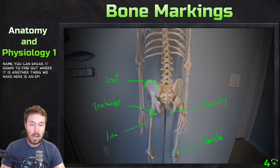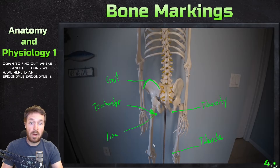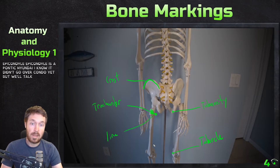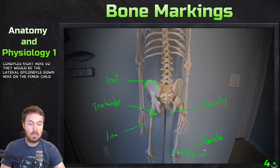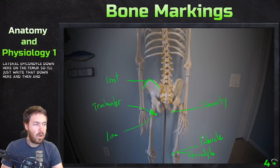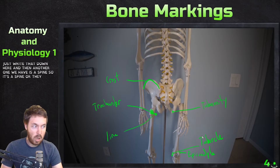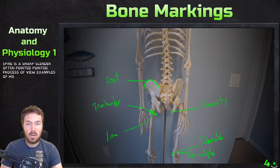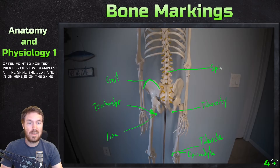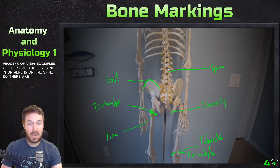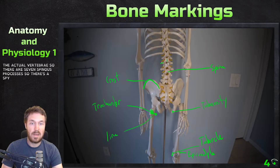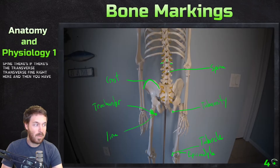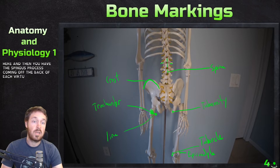Another marking is an epicondyle — which is upon a condyle. We'll talk about condyles when we get to articulations. An epicondyle is usually the part right above the condyles, like the lateral epicondyle down here on the femur. Then there's a spine, which is a sharp, slender, often pointed process. A good example is on the vertebrae — there are spinous processes coming off the back of each vertebra, and each one of those is a spine.